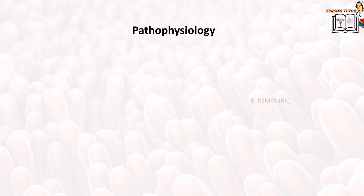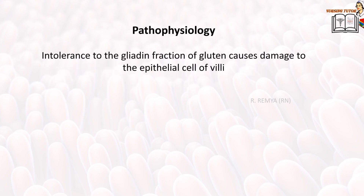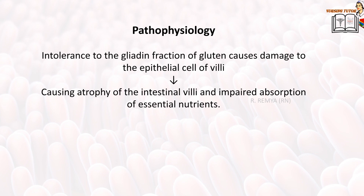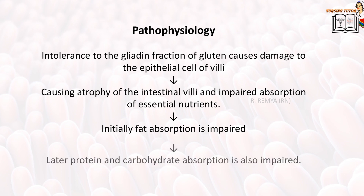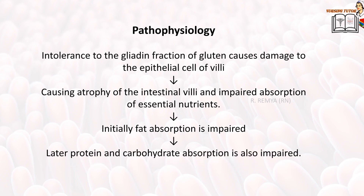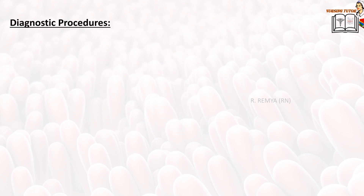Pathophysiology of celiac disease: intolerance of the gliadin fraction of gluten causes damage to the epithelial cells of the villi, causing atrophy of the intestinal villi and impaired absorption of nutrients. Initially, fat absorption is impaired; later, protein and carbohydrate absorption are also impaired.